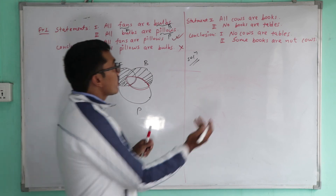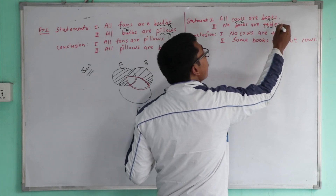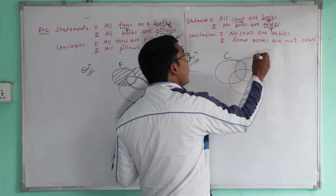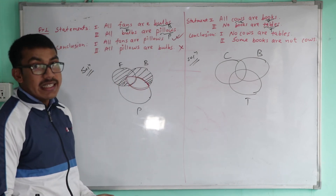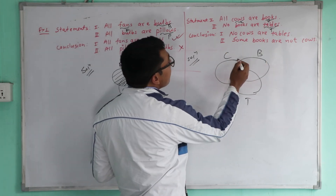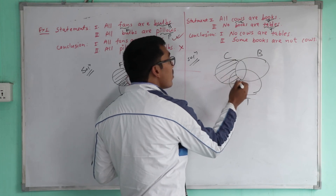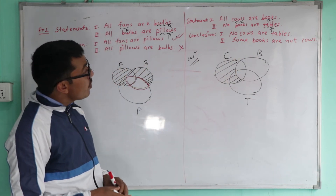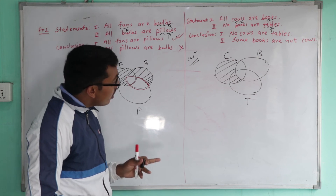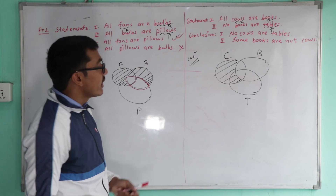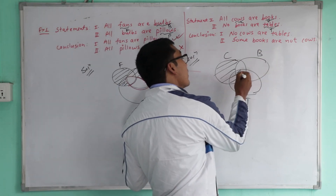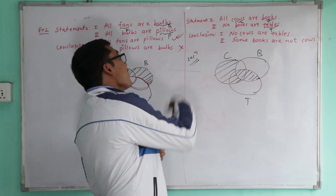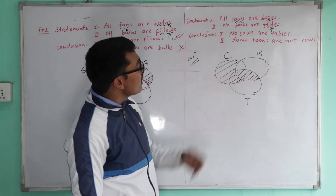Next example: All cows are books. Let cows be C, books be B, tables be T. All cows are books — you can draw the Venn diagram easily. No books are tables. From this, the conclusion 'No cows are tables' follows.